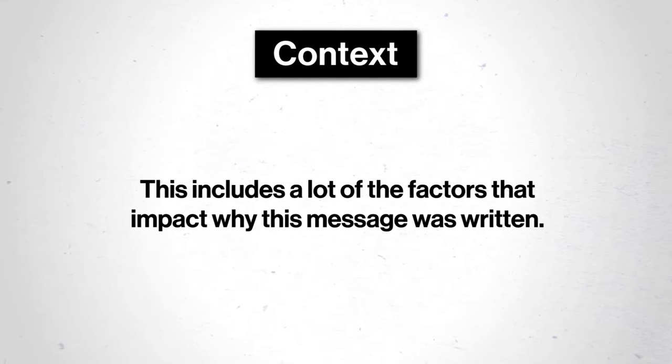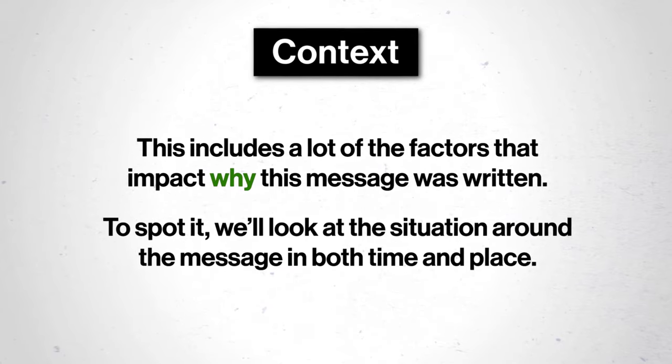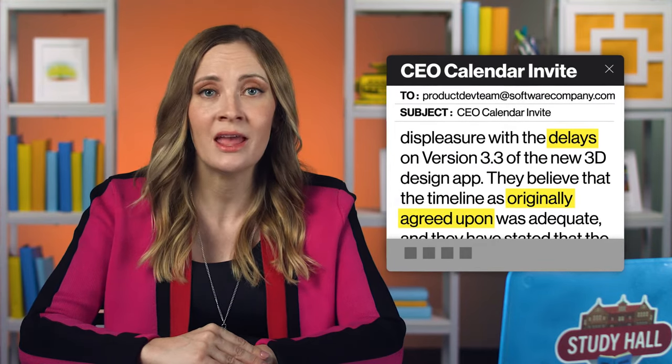Context includes a lot of the factors that impact why this message was written. To spot it, we'll look at the situation around the message in both time and place. If we're insiders at this company, we can both pull from past experiences of what led up to this message, and also notice things in the message itself. Everything from delays to 'the timeline as originally agreed upon' is referencing the time part of context. And the place of the message is at work, where other factors compete for the spotlight — the other tabs and apps open on a software engineer's screen, or the other projects the development team is wrangling. Yvonne's consideration of context likely included the knowledge that this message was falling into a particularly stressed environment. As team members, we might see this note and begin interpreting, because we understand these elements of context.